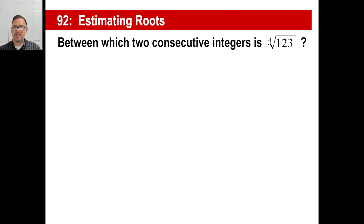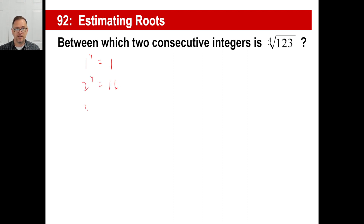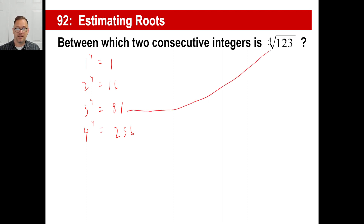Another one: the fourth root of 123 — what number times itself four times gives you around 123? 1⁴=1, 2⁴=16, 3⁴=3×3×3×3=9×9=81, 4⁴=256. So 123 falls between 81 and 256, which means the fourth root of 123 is between the integers 3 and 4. That's your answer.